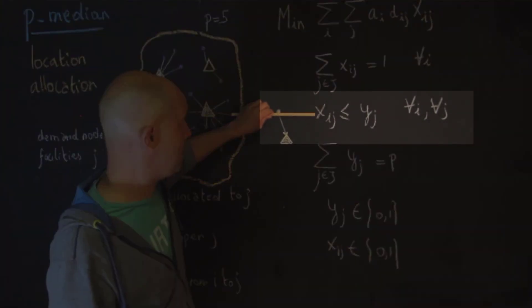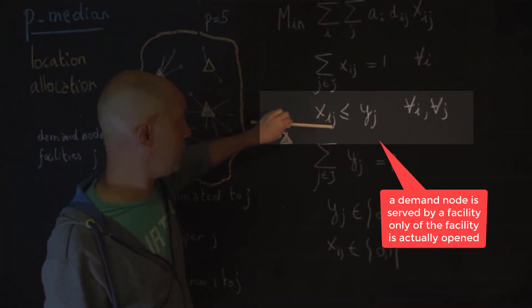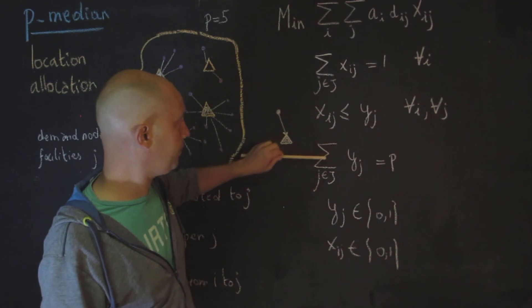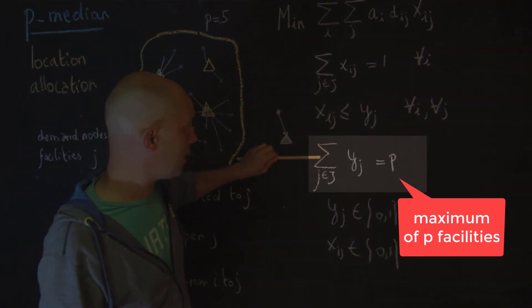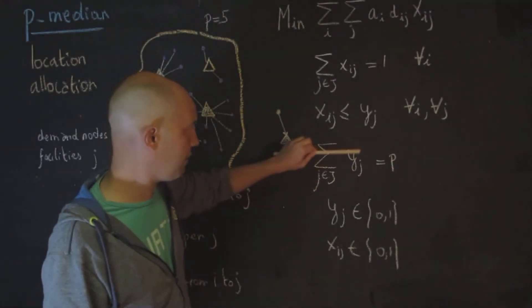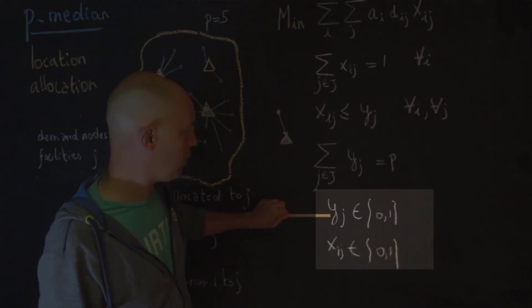Here, we're basically saying that if a demand node is assigned to a facility j, then that facility must be open. Otherwise, it doesn't make any sense. This one is also quite important. This is sort of the upper budget, where we are saying that the total sum of the facilities that can open should be equal to p. You could also have less than or equal to p. And then you have the regular integer constraint.